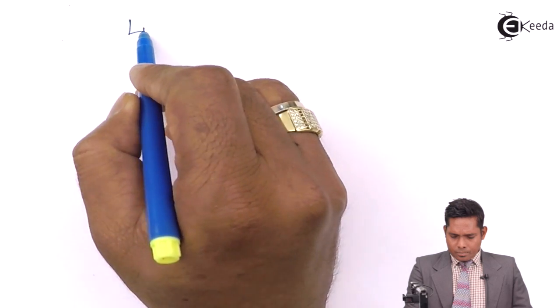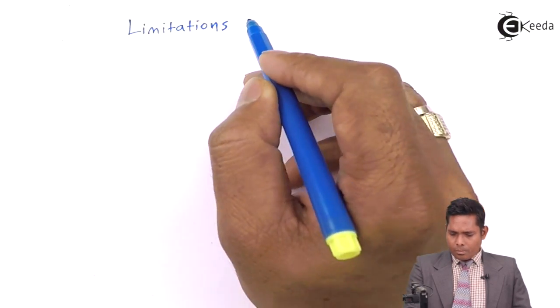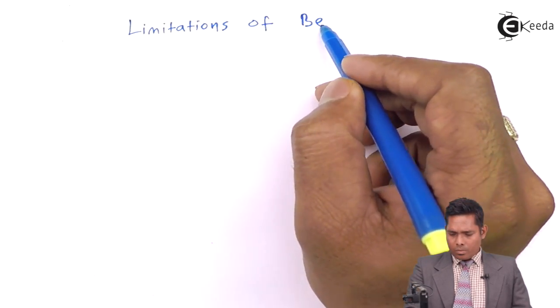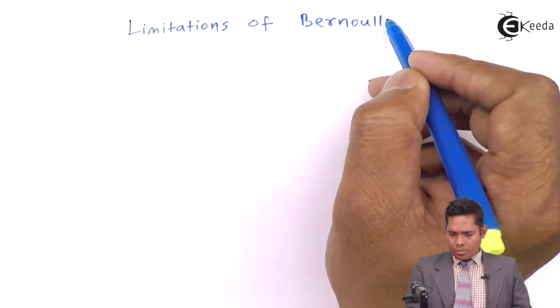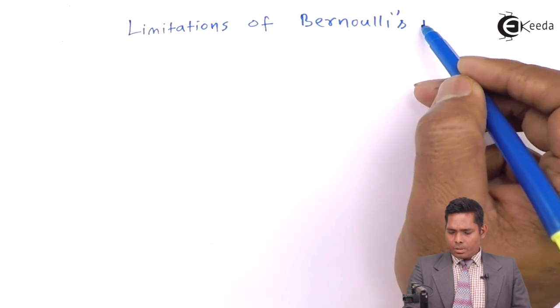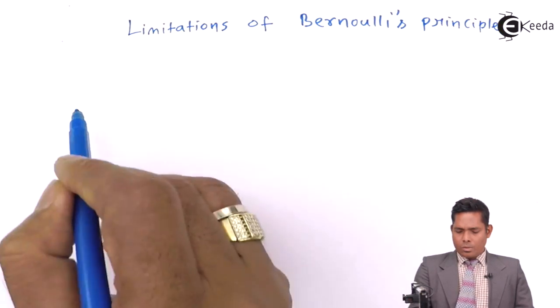That limitations are limitations of Bernoulli's principle. Point number one, the liquid is not ideal. So that means there must be some viscosity.